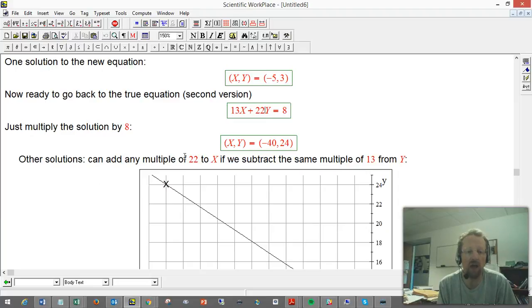So, we can add, the key is simply if we add, say, twenty-two to x, we'll be adding twenty-two times thirteen here. Then, if we simultaneously subtract thirteen from y, we'll be subtracting off the same, twenty-two times thirteen. And you can do that for any multiple of twenty-two added to x if we subtract the same multiple of thirteen from y.